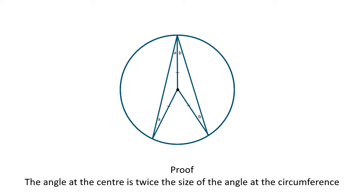So the last angle in each triangle must be 180 degrees minus 2a and 180 degrees minus 2b.